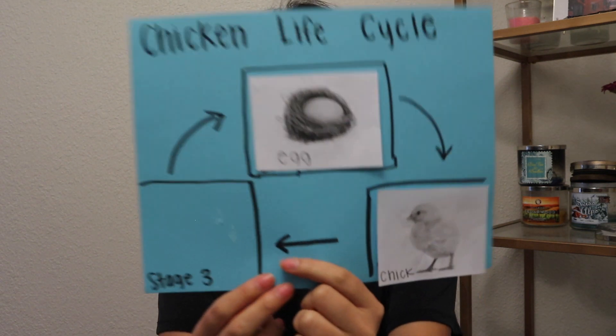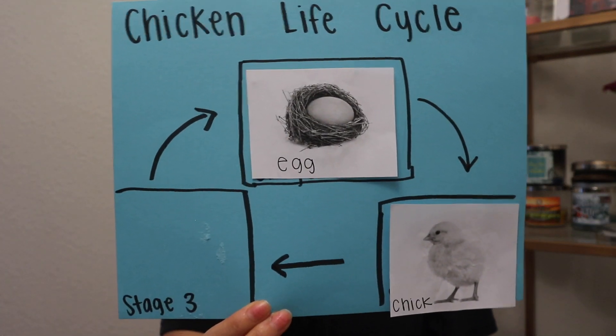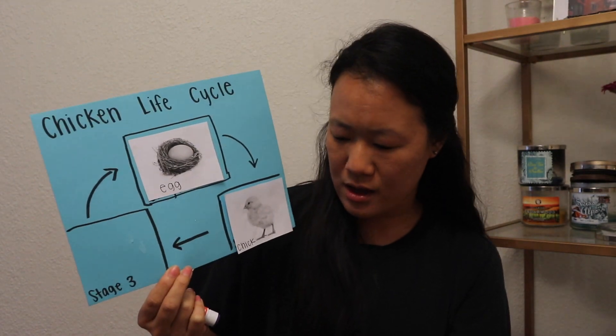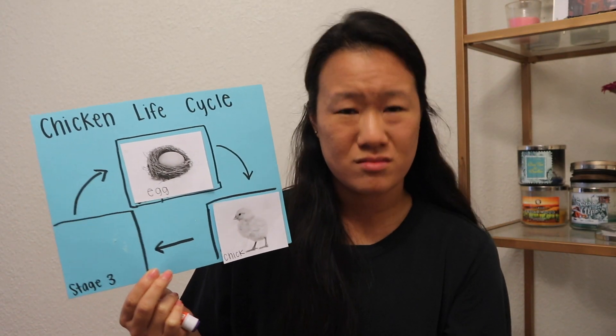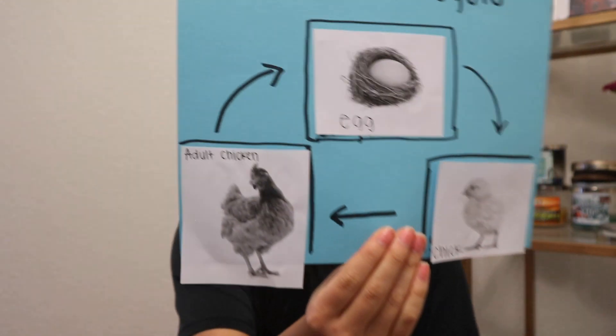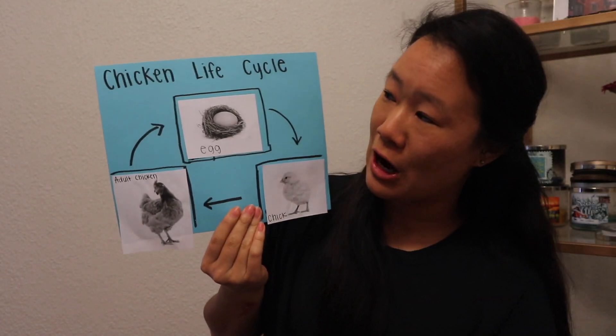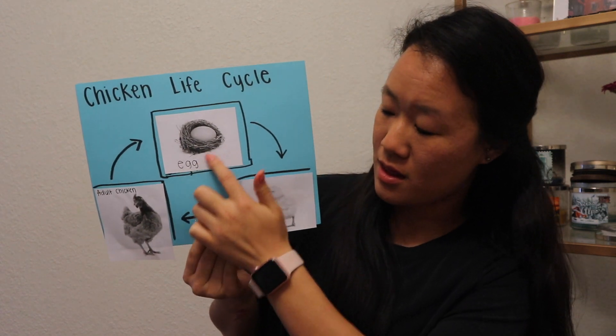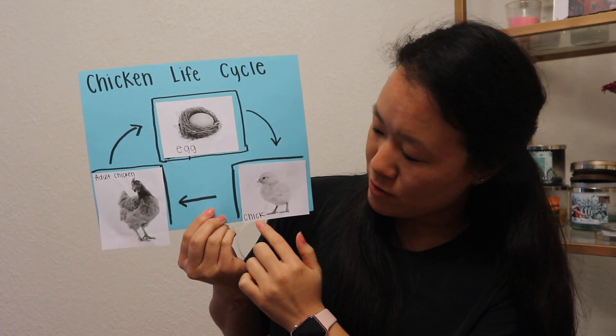So now it looks like this. After the egg, after the chick — are chickens done growing? No. They turn into a chicken, and that, my friend, is an adult chicken. Let me glue it down and done. As you can see, we completed our chicken life cycle. It started off as an egg, then turned into a chick, which then turns into a chicken.